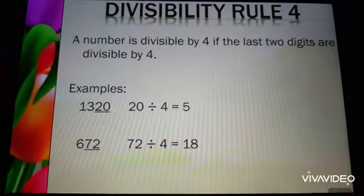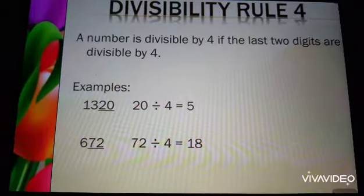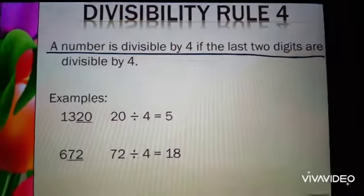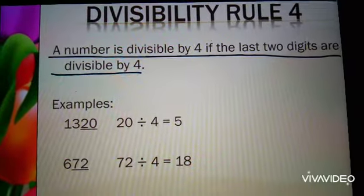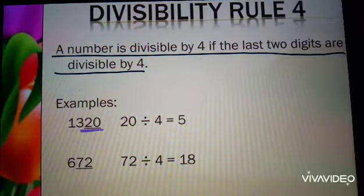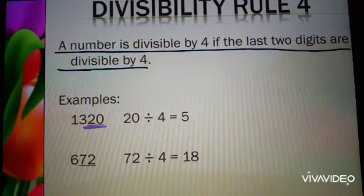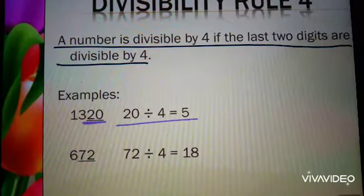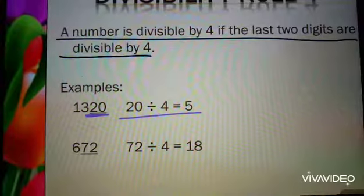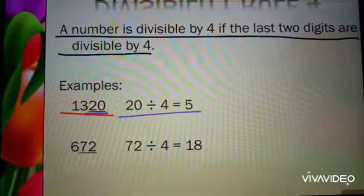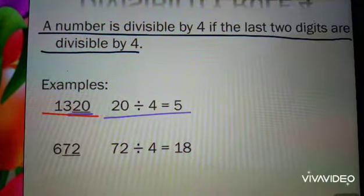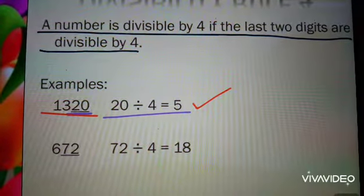Now, divisibility test by 4: a number is divisible by 4 if the last two digits are divisible by 4. That means, if the ones and tens place of any number are divisible by 4, then the whole number is divisible by 4. For example, in 1320, the last two digits 20 are divisible by 4, so 1320 is divisible by 4.